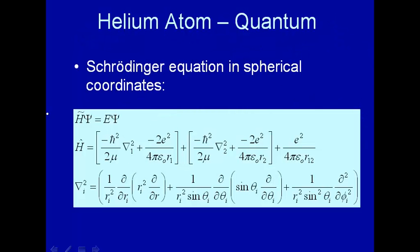Okay, so here we are, the Schrödinger equation where H now, the operator H, we have a term for the first electron, we have a term for the second electron, and then we have this interaction term here.